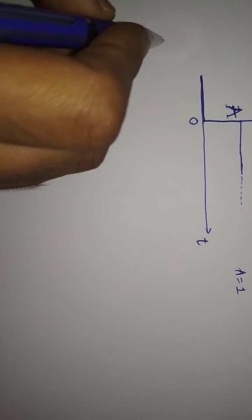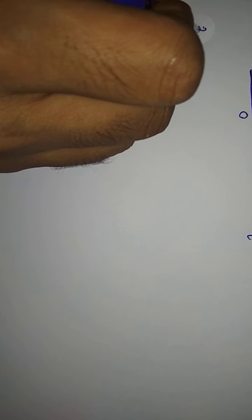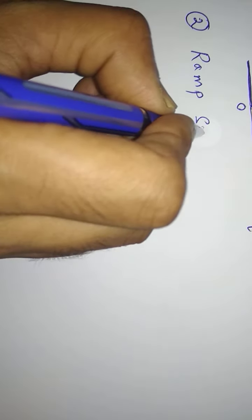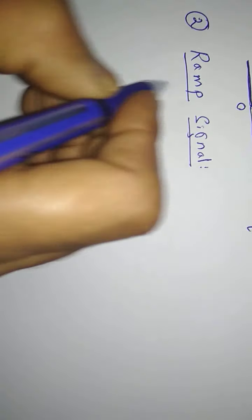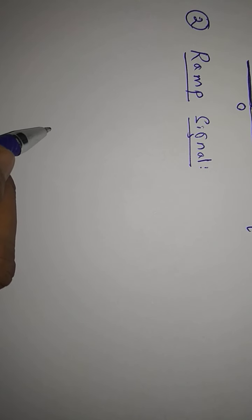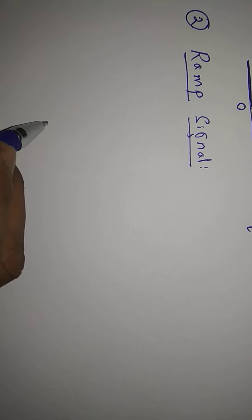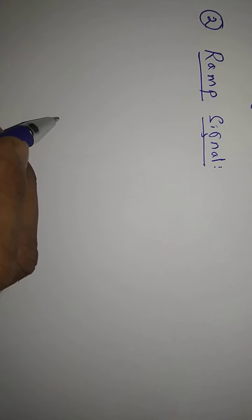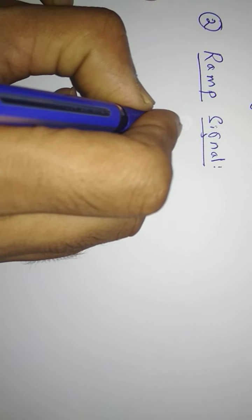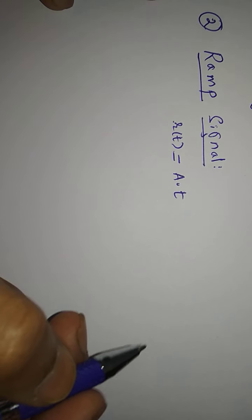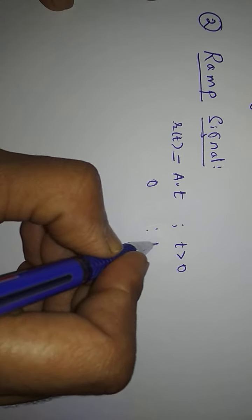Moving further, I would consider the second standard test signal, which I call the ramp signal. First I would consider the definition, then the equation, then the Laplace transform, and then I would sketch how a ramp signal looks like. The ramp signal is a signal which starts at a value zero and increases linearly with time. Mathematically, R(t) = A·t for t greater than zero, and R(t) = 0 for t less than zero.